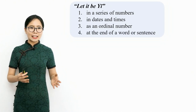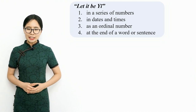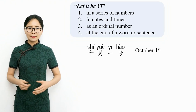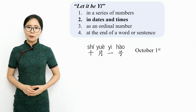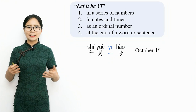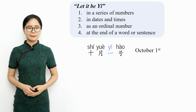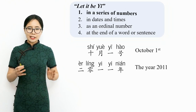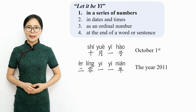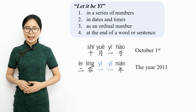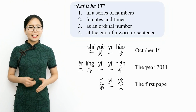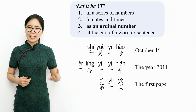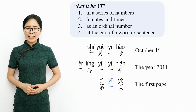Let's try applying the 'let it be Yi' rule to some Chinese words and phrases. Shi yue yi hao means October 1st — it is a date, so it follows the 'let it be Yi' rule, and Yi keeps its default first tone: Shi yue yi hao, October 1st. Er ling yi yi nian means the year 2011 — it is a series of numbers, so Yi keeps its default first tone: Er ling yi yi nian, the year 2011. Di yi ye means the first page — Yi is used as an ordinal number, so it follows the rule and keeps the first tone: Di yi ye, the first page.